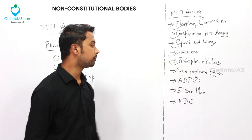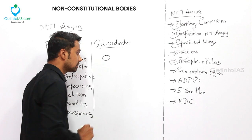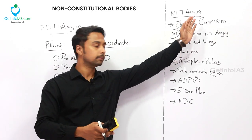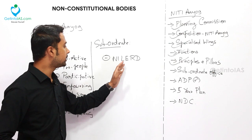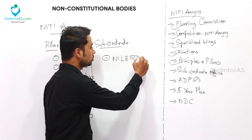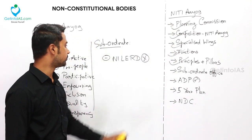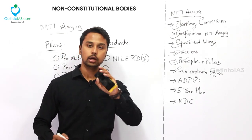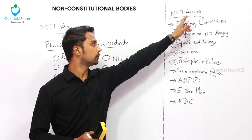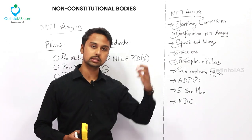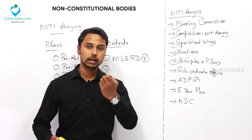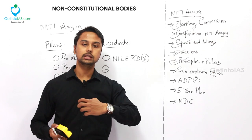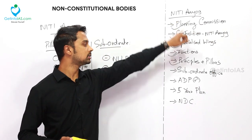The subordinate office of NITI Aayog is NILERD — the National Institute of Labour Economics Research and Development. This institute functions with grants-in-aid from NITI Aayog and also through project contracts, which provide it financial support.